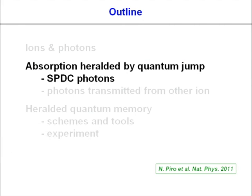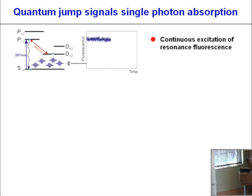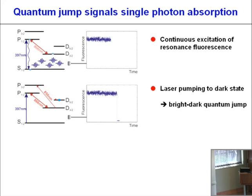I'll now show our experimental results. The first is absorption of SPDC photons heralded by a quantum jump in the atom. If we shine 397 nm and 866 nm lasers on a calcium ion, it produces continuous fluorescence. If we add a little 850 nm light, after a short while the atom will be pumped into the D5/2 state — which is long-lived, about one second — and the fluorescence will cease, giving a bright-to-dark quantum jump. Absorption of a photon at 854 nm taking the ion from D5/2 back up will induce a dark-to-bright quantum jump, since with high probability the atom decays back to S and starts fluorescing again.